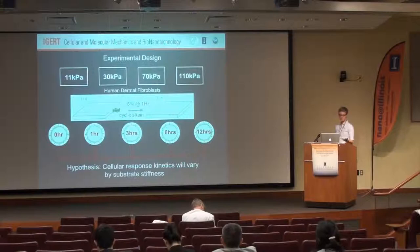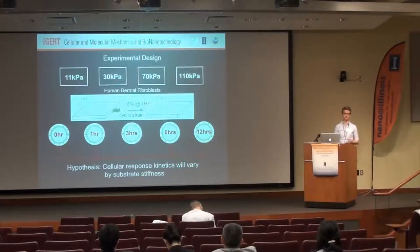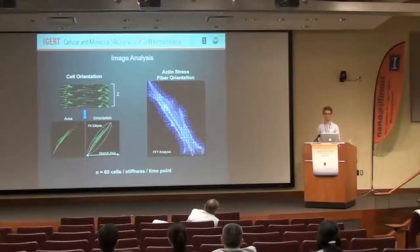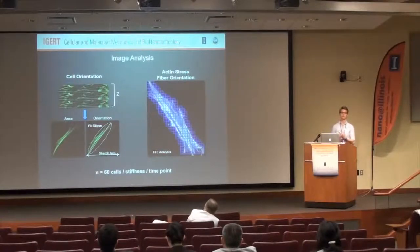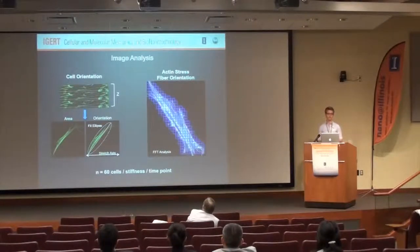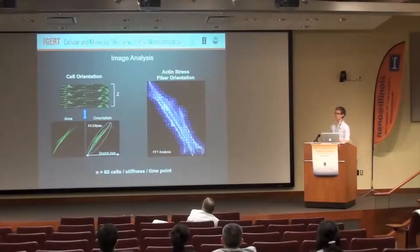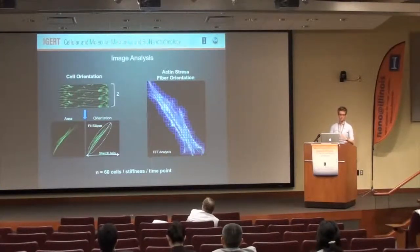The hypothesis is that cells will respond differently at different time points on different stiffnesses. For analysis, I fixed the cells and stained them with phalloidin to visualize their actin stress fibers, then looked at both the macro-level cell orientation and intracellularly the orientation of the actin stress fibers themselves — a macro-to-internal measurement of reorientation.